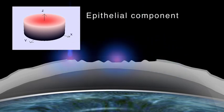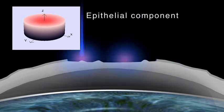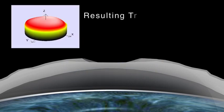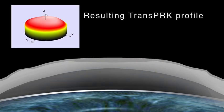TransPRK is a versatile approach. It's useful in all cases where a difficult epithelial flap is expected or when the epithelium covers corneal irregularities of the stromal tissue.